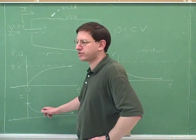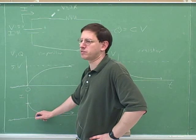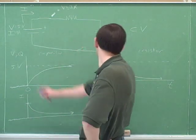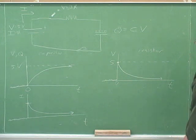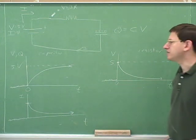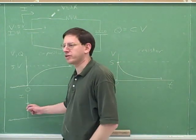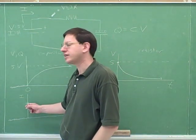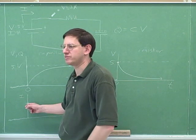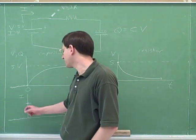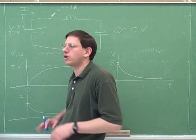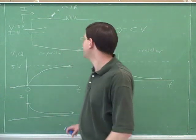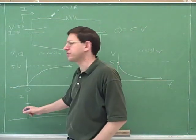We worked out the current across the resistor, and since all devices are in series they all share the same current. So the current graph — which jumps up at time zero to five volts divided by R, then decreases asymptotically — describes current everywhere in the circuit. Capacitors resist jumps in voltage, but in doing so they must allow jumps in current.